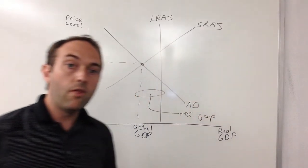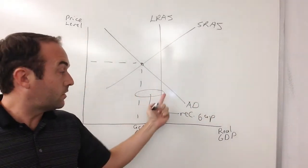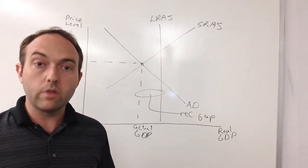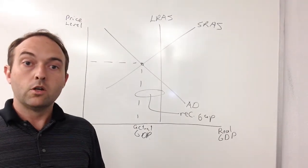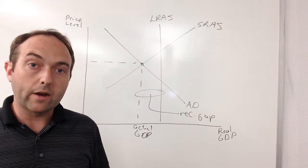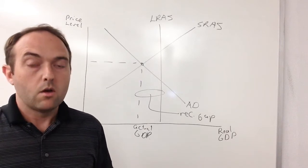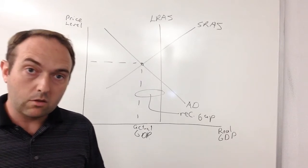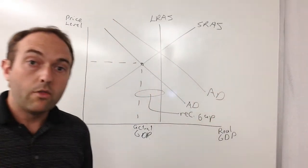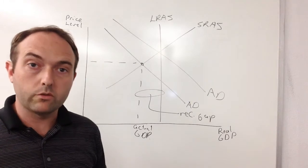For this chart, that recessionary gap is this distance right here. If the country were to close that recessionary gap, one of two things would have to happen. Either short-run aggregate supply would shift to the right or aggregate demand would shift to the right. If you're going to shift aggregate demand to the right, which I'll do here, there are a couple main things that can cause this.